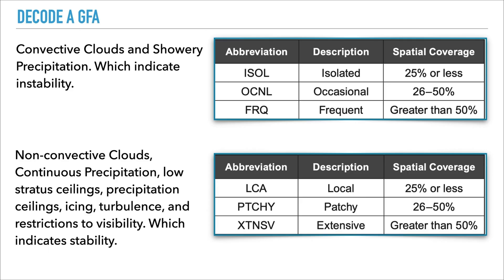The next is non-convective clouds, where you can anticipate continuous precipitation, low strata ceilings, icing, turbulence, and restrictions to visibility. In this case we have three designators: for 25% or less we call it local, for 50% we call it patchy clouds, and greater than 50% we call it extensive clouds.